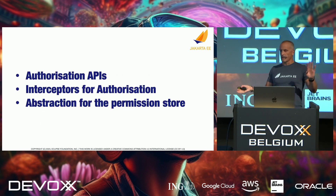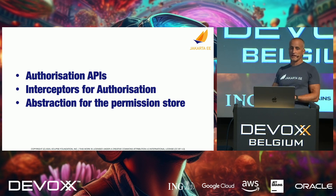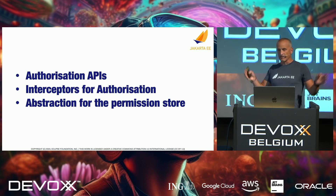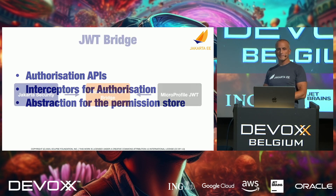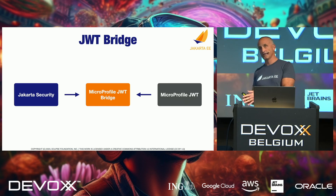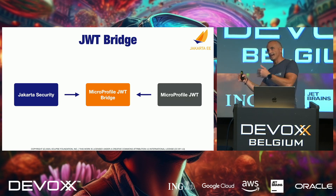The security specifications are doing a lot of things — I've summarized a few here. There's an authorization theme: they're updating the authorization APIs, fixing interceptors for authorization, and abstracting the permission store so everything works together. They're also doing something in collaboration with MicroProfile — a new specification called the MicroProfile JWT Bridge — that will make JWT authentication with job tokens possible in Jakarta EE as well. It's an integration specification in between the two.